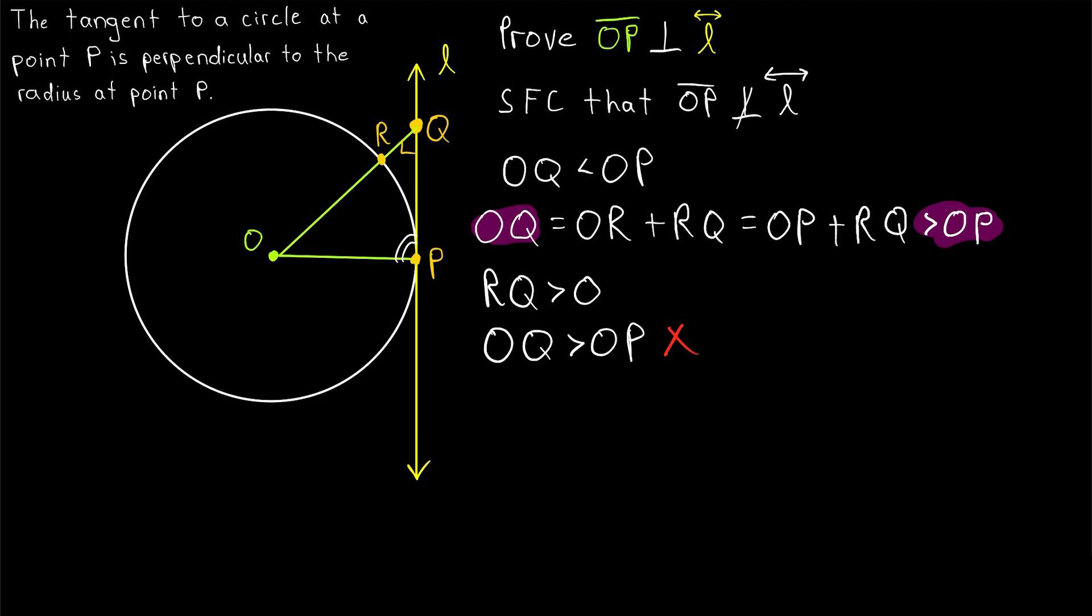Because remember, we demonstrated in two ways that OQ is less than OP. But now we have OQ is greater than OP. That means our original assumption must have been false. Thus, the radius to the tangent line is perpendicular.